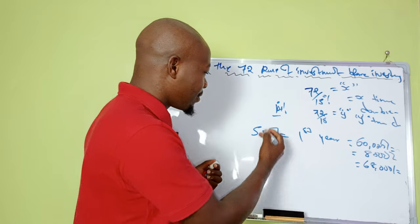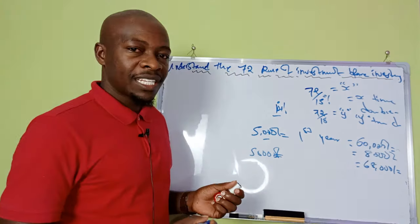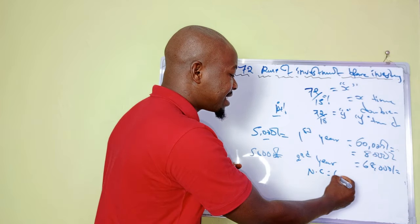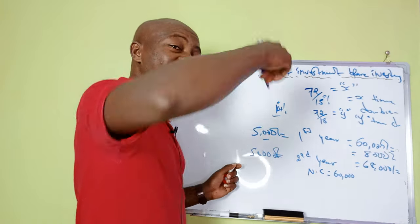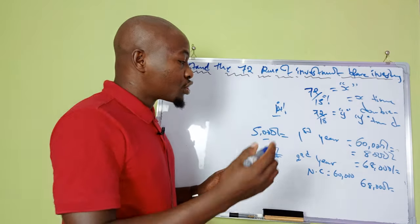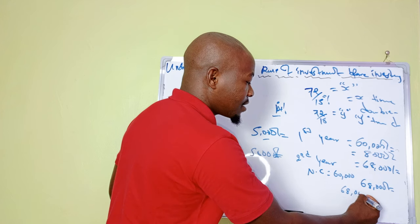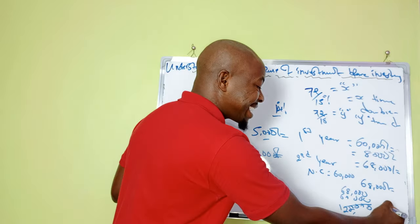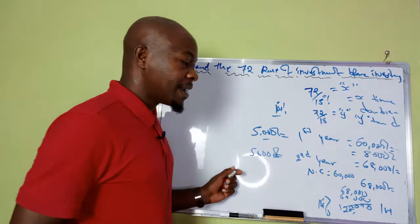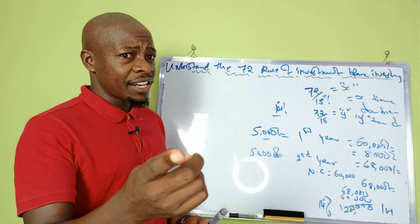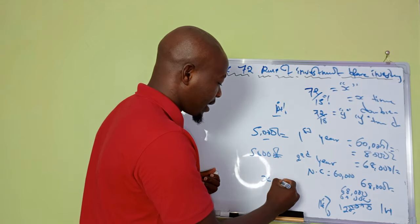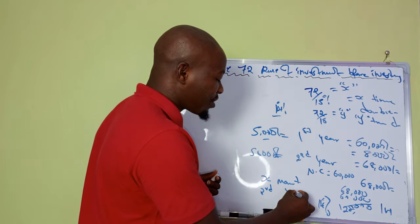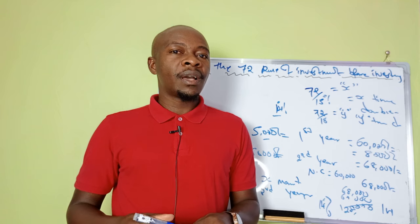If you go ahead and do the second year, continuing to set aside 5,000 each month, the second year you have the normal contribution of 60,000 plus your existing 68,000 — that gives you 128,000. Now this is subjected to 14%, and 14% of 128,000 is a very huge amount of money. You get that amount X. You start to realize things are becoming better. But by the time you're on your third year, that's when you start to realize: wow, this is a serious game.